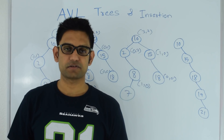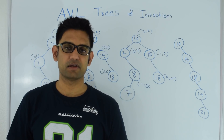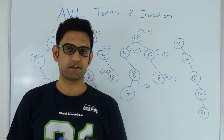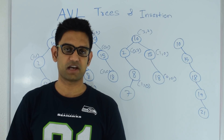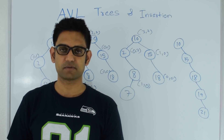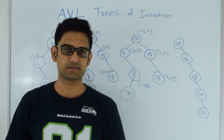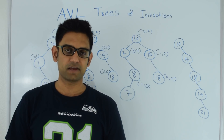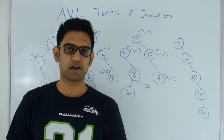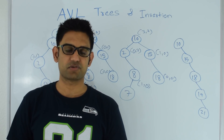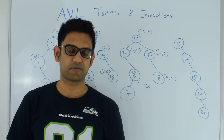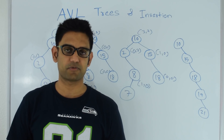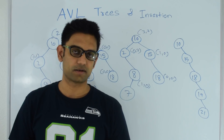A binary search tree is a special kind of binary tree where everything on the left subtree is less than or equal to root and everything on the right subtree is greater than or equal to root, and this is recursively true for every node. AVL is a special kind of binary search tree where the difference of the height of the left subtree and the right subtree will never be greater than 1.